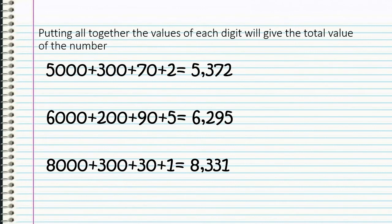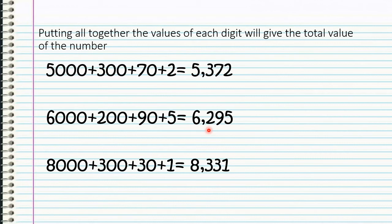Putting all the values of each digit together will give us the total value of a number. If we put together 5,370 and 2, it gives us a total of 5,372. If we put together 6,290 and 5, it gives us 6,295. If we have 8,330 and 1, it gives us a total of 8,331.